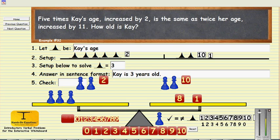To do the check, we go back to the original setup. Let's just verify it one more time. Five times k's age, that's five pawns increased by two, is the same as twice her age increased by 11. If each pawn is three, five times three is 15, and two is 17 on the left side. And on the right side we have three and three is six, and 11 is 17. So 17 equals 17.